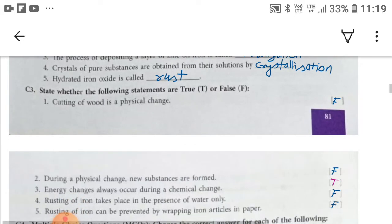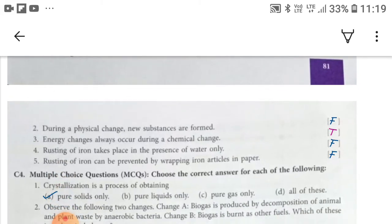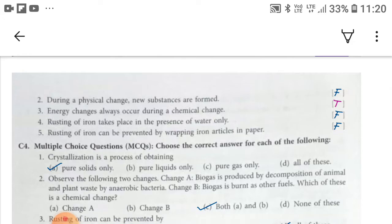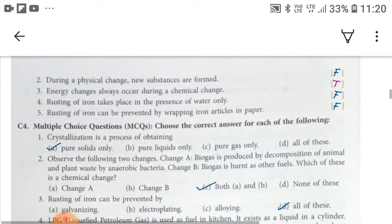Fifth, hydrated iron oxide is called rust. Now the C3 part of exercise. Rusting of wood is a physical change, which is the false statement. Second, during a physical change new substances are formed, so this statement is also false. Third, energy changes always occur during a chemical change. This statement is true. Rusting of iron takes place in the presence of water only. This statement is false. Fifth, rusting of iron can be prevented by wrapping iron articles in paper. So this statement is also false.